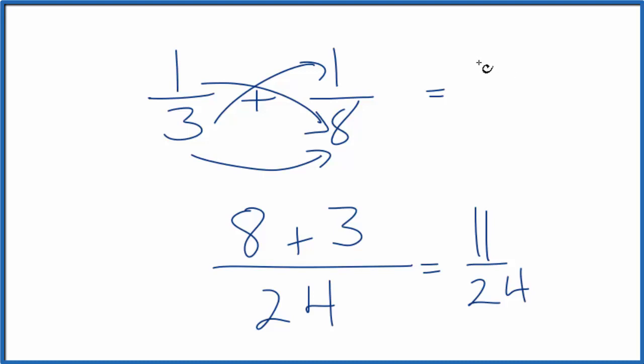And again, we have the same answer, eleven twenty-fourths. So the fraction is one-third plus one-eighth, that equals eleven over twenty-four. This is Dr. B, and thanks for watching.